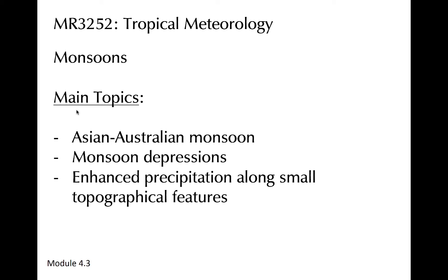Monsoons impact billions of people in South and Southeast Asia, the Maritime Continent, and Northern Australia annually. These large-scale rain events are responsible for much of the annual precipitation that occurs in many locations in the region. Essentially, the monsoon is the off-equatorial migration of the intertropical convergent zone on the nearby landmasses. This module will discuss some of the basics of the South Asian-Australian monsoon.